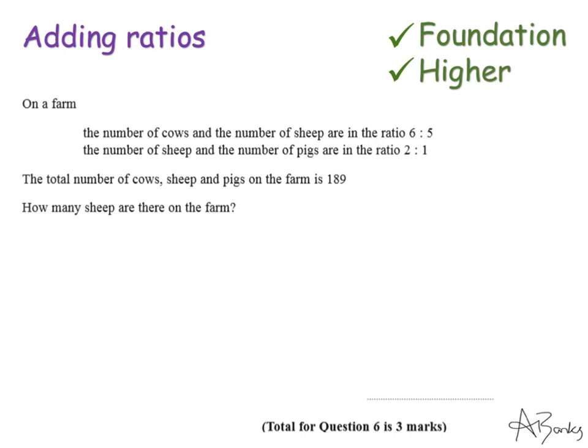So I'm going to write out the information they've been giving me much shorter. So the first thing is that the ratio of cows, so I'm going to put C for cows and S for sheep, they're in the ratio of 6 to 5.